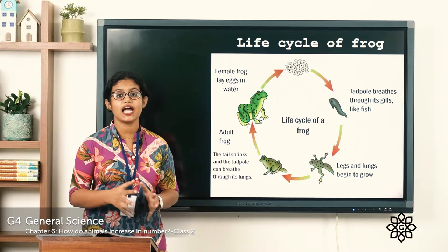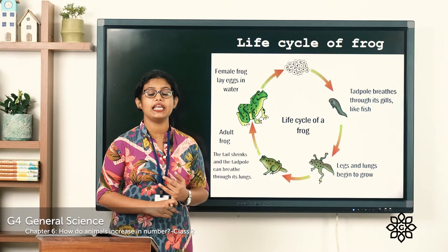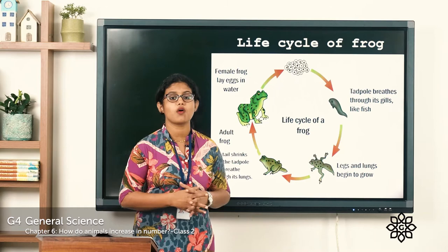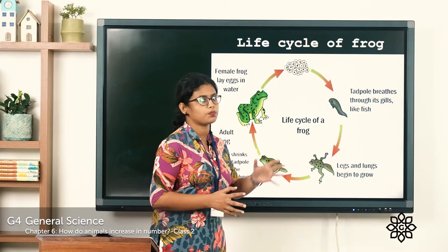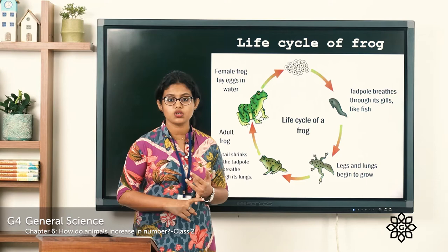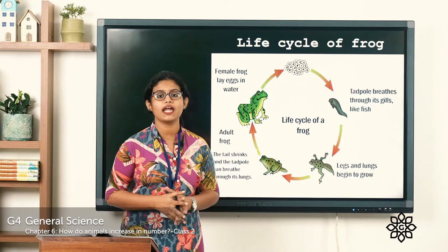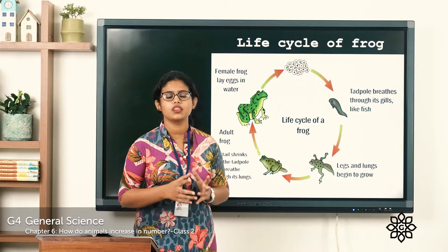Now let's move on to the life cycle of a frog. Frogs also lay eggs to produce their young ones. They lay eggs in water, and they lay lots of eggs so that some of them survive. These eggs hatch into tadpoles. If you closely observe, you can see these tadpoles look more like a fish — they have a long tail, they live in water, and this long tail helps them swim. They use their gills to breathe and do not have legs. These tadpoles feed on water plants.